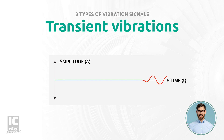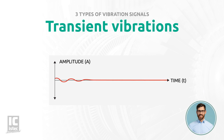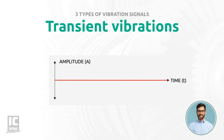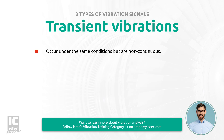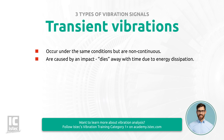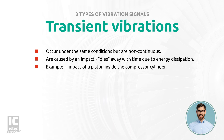Transient vibrations are vibrations that occur under the same conditions, but are non-continuous. As this type of vibration dies away with time due to energy dissipation, they can be observed only with vibration measurement equipment for a short period of time. An example of transient vibrations are those caused by an impact, such as the impact of a piston caused by the reciprocating movement inside the compressor cylinder, or driving over a speed bump with a car.